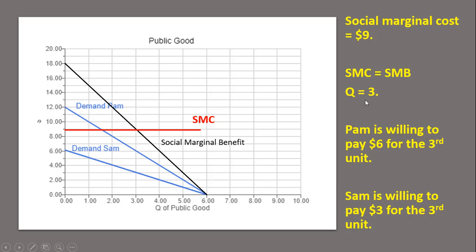We go down to the quantity axis and we get a quantity of 3. So that is the ideal level, the efficient level of the public good. Notice at 3 units of output, Pam is willing to pay $6 for the third unit, while Sam is willing to pay at most $3 for the third unit. If we add 6 plus 3, that equals the marginal cost. You could refer to this $6 and $3 as the Lindahl prices as well.